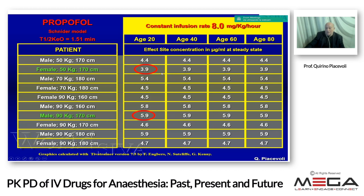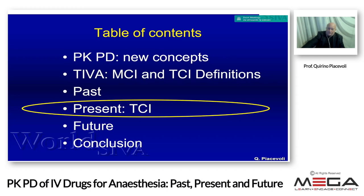We need to know very well the covariates. In anesthesia, one very important covariate is age — making the same concentration of drug, age changes the concentration in our blood significantly. Do not give the same concentration to an 80-year-old patient as to an 18-year-old patient. Other important covariates are weight and gender, which can also significantly change the value of concentration. For these reasons I use TCI extensively.